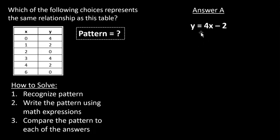Answer A says that y equals 4x minus 2. To verify that, we need to simply place the values of x and y from the table into the equation. So, let's place the first pair.